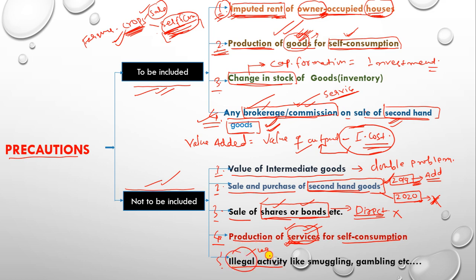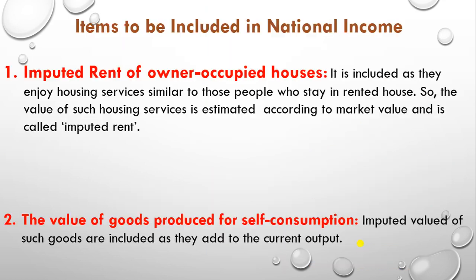The fifth point is that all values of illegal activities are not included in national income. In national income, we only talk about legal activities. The value of illegal activities such as smuggling, gambling, black marketing, etc., are not added.